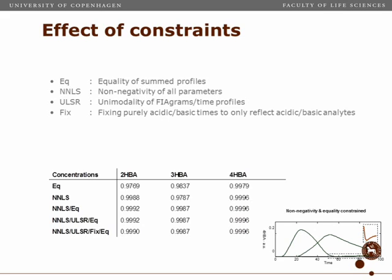We estimate concentrations, time profiles, and the underlying spectra — six of each. We know the acidic and basic time profiles will sum to a constant shape for all samples, which we impose as an equality constraint. We know all parameters are non-negative, which we impose as a non-negativity constraint. We know time profiles are unimodal — if an acidic sample appears and starts disappearing, it doesn't appear again — so we impose a unimodality constraint. Finally, we fix certain elements to zero to impose the pure acidic and basic time points. All chemical knowledge is thus expressed as mathematical restrictions on the parameters.